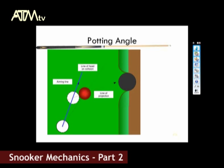Our blue line here is the aiming line — the line which the cue ball should take to enable the object ball to follow the projection line. The angle between this aiming line and the line of head-on collision, shown in pink, is the potting angle.